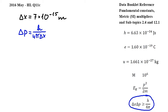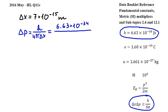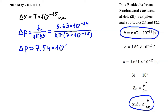So substituting, we get Planck's constant, which can be found in the fundamental constant section of the data booklet, and which is given to be 6.63 times 10 to the power of negative 34, divided by 4 pi times delta x, which is 7 times 10 to the power of negative 15. Carrying out this calculation and rounding, we get approximately 7.54 times 10 to the power of negative 21 Newton seconds for the uncertainty in the momentum.